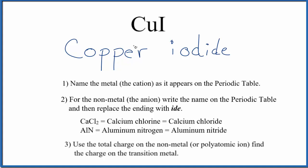But because copper is a transition metal, we need to write the charge with Roman numerals between these names. We don't know the charge on copper, but we do know that iodine is always going to be one minus.